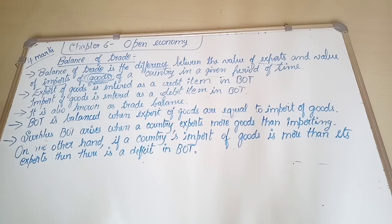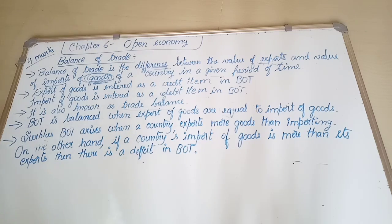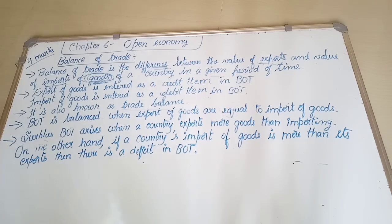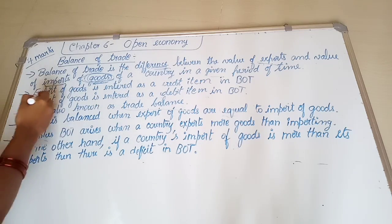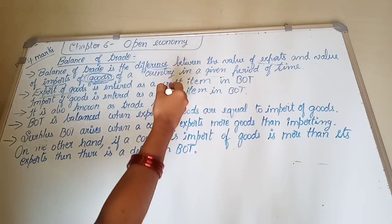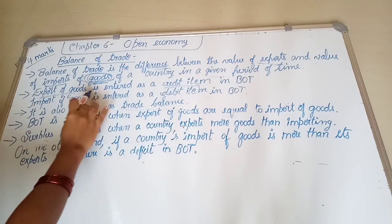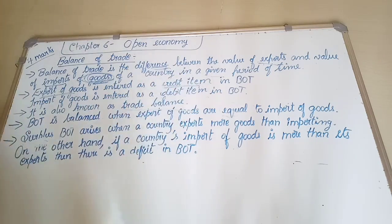The general rule is: debit what comes in, credit what goes out. Export of goods means we are sending our goods to a foreign country — the goods are going out. So, as per the rule 'credit what goes out,' export of goods is entered as a credit item in the BOT.